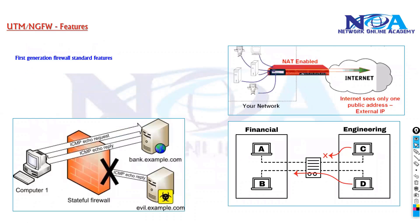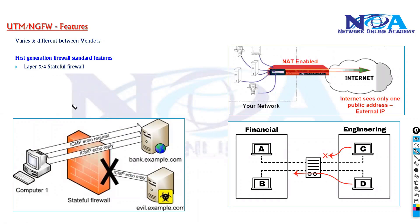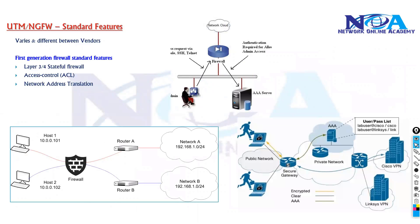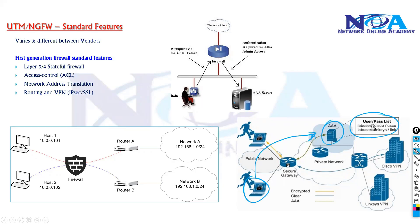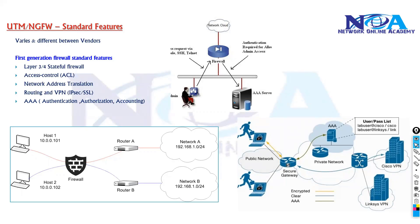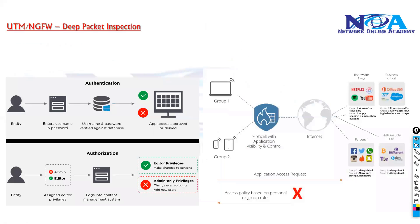The features vary based on vendors. Stateful packet inspection keeps track of return packets and denies unsolicited initiating packets. NAT, access lists, and VPNs allow users to connect remotely and authenticate via external accounts. Apart from these standard features, Next Generation Firewalls support additional features called deep packet inspection, with inspection done at Layer 7. One of those options is identity-based access control.